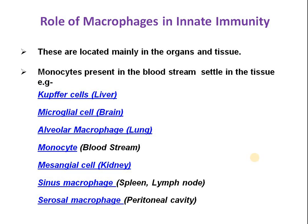Macrophages are mainly located in the organs and tissues. Monocytes present in the bloodstream come out from the bloodstream and settle down in different organs and tissue regions, where they act as macrophages. They are called macrophages because they are larger in size and have phagocytic reactivity.